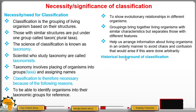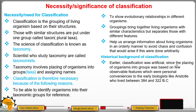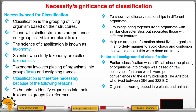Let us now look at the historical background of classification. In early times, classification was artificial, since the placing of organisms into groups was based on a few observable features which were personal conveniences to early biologists like Aristotle, who lived between 384 and 322 BC. At that time, organisms were grouped into two main groups: plants and animals.